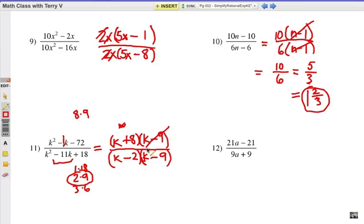Notice how this binomial cancels with that binomial. So my final answer is k plus 8 over k minus 2. Notice I don't need the parentheses anymore because I'm done.